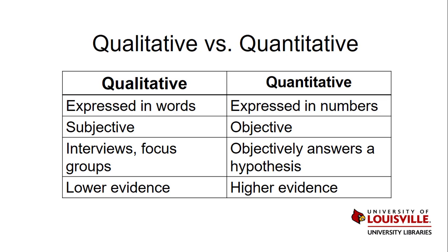Lower levels of evidence are generally more likely to be qualitative. Editorials and expert opinions are subjective, and therefore qualitative. On the other hand, the study designs of randomized controlled trials and other advanced study types are quantitative because they depend on eliminating bias and subjectivity.